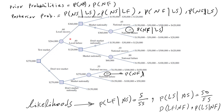We also do experiments such as a test market, producing experimental outcomes — events like local failure and local success. The second type of probability is the probability of experimental outcomes. Then we have posterior probability — for example, the probability of national failure given that we had local success.